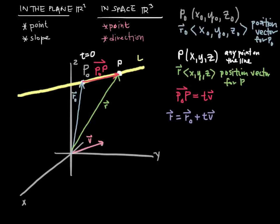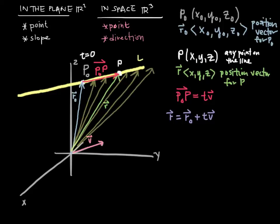As t begins to take on positive values, we are adding small positive scalar multiples of v onto r-naught, and so we are finding position vectors for points along the line like so. As t increases, we find more and more position vectors along the line.